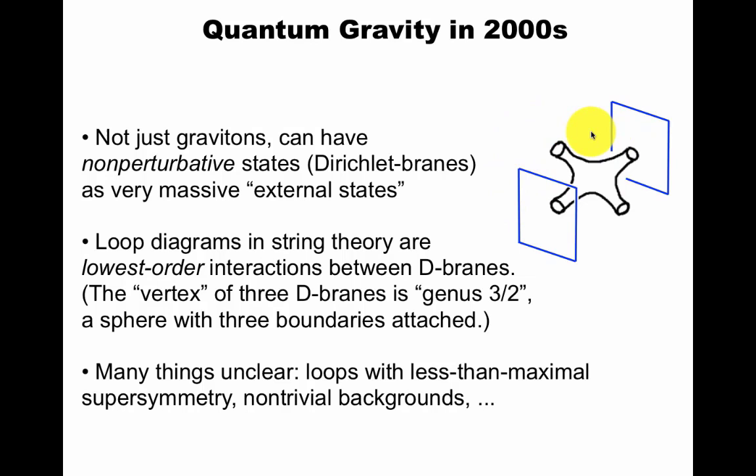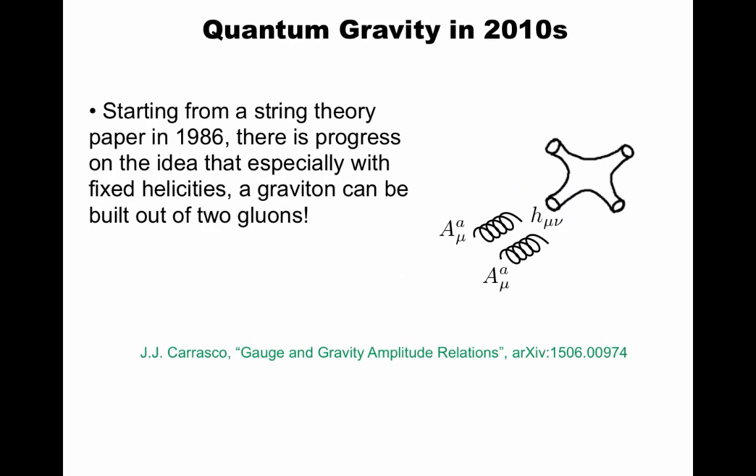Quantum gravity in the 2000s, so you can take Bryce DeWitt's drawing here of a string diagram, you put non-perturbative states as external states, like Dirichlet branes, that I will talk about in a later video. Loop diagrams in string theory are then the lowest order interaction between these non-perturbative objects. However, many things remain unclear. Still, there was progress in this very interesting relation between a string theory paper from 1986 called KLT that led to progress on the idea that maybe gravity is the square of gauge theory, as is sometimes stated.